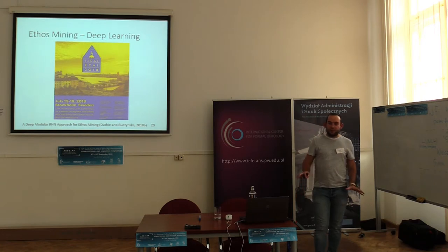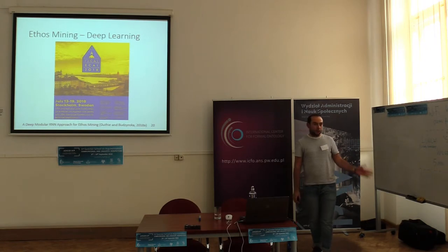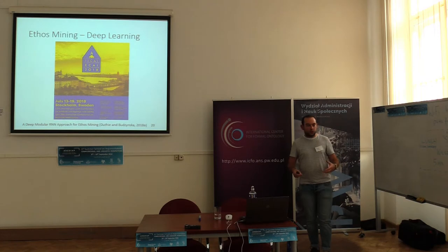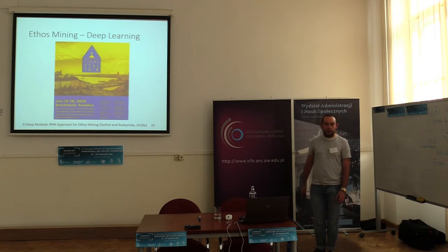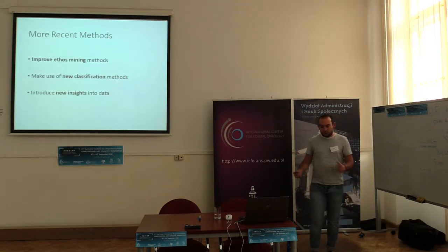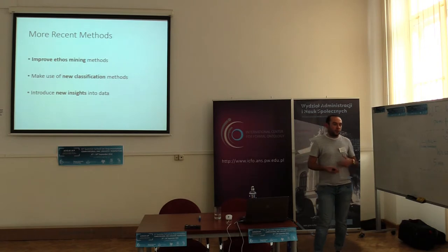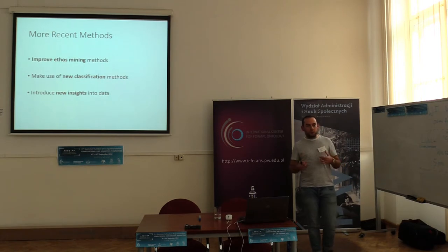The second step was that we wanted to try and generalize some of these ideas. We submitted a paper to IJCAI, which was presented in July, and the idea was to try and use some new classification methods like deep learning, and try and generalize the ideas we had. We wanted to do this to improve the ethos mining methods and see if we can get higher accuracy, and also to see if there are any other insights into the data we can determine.